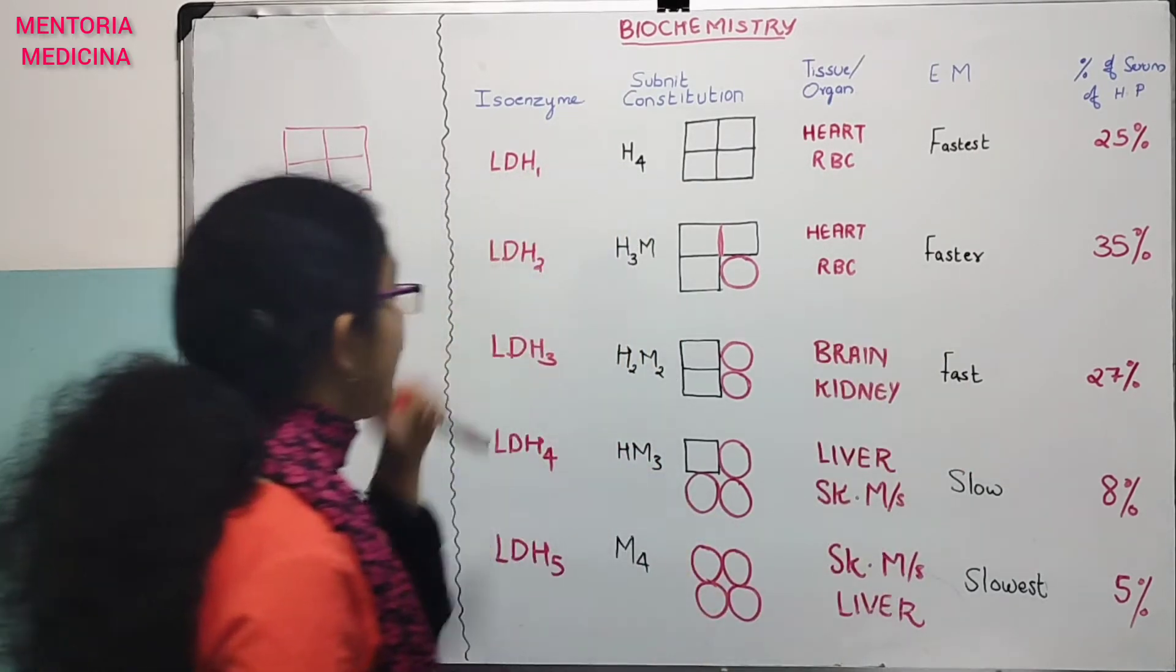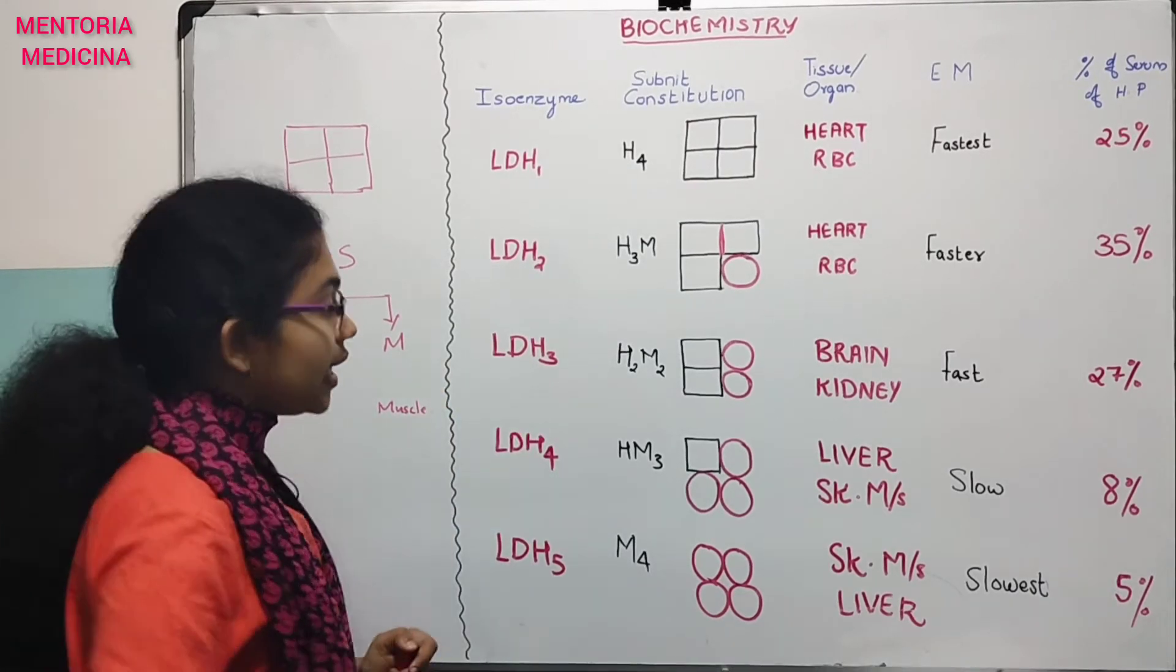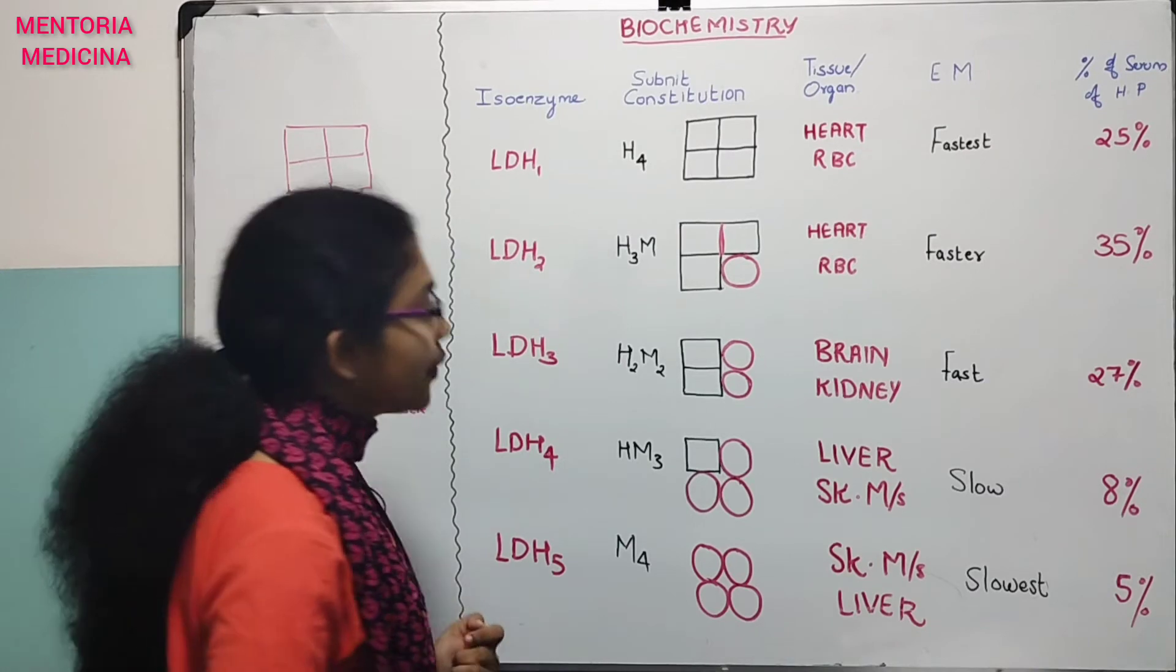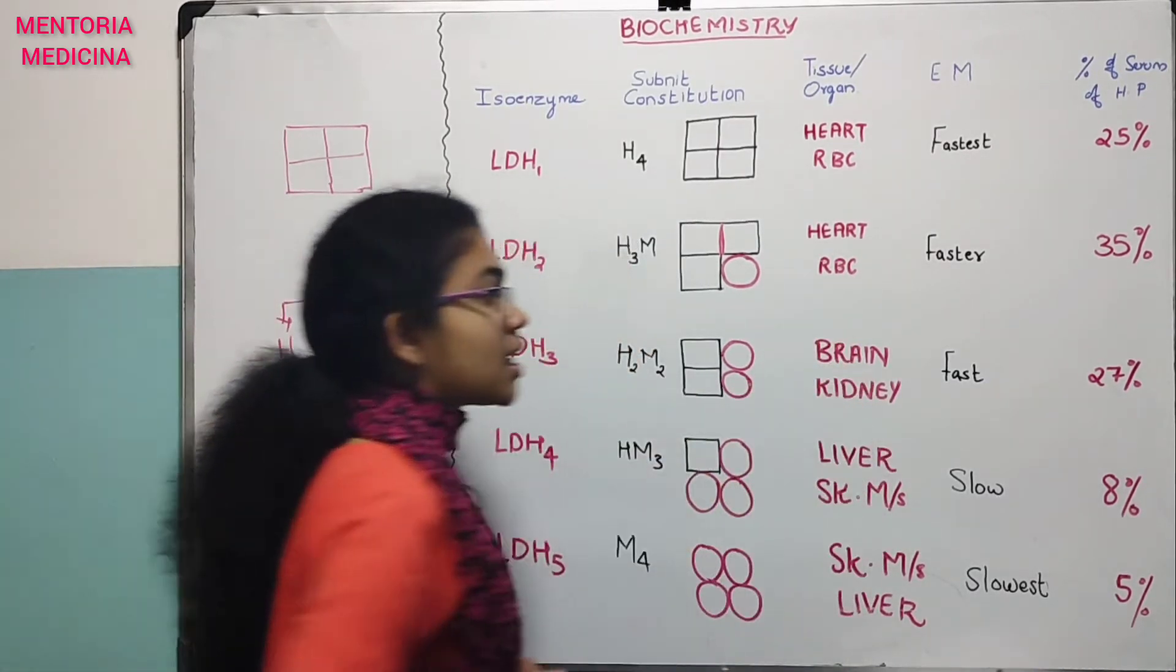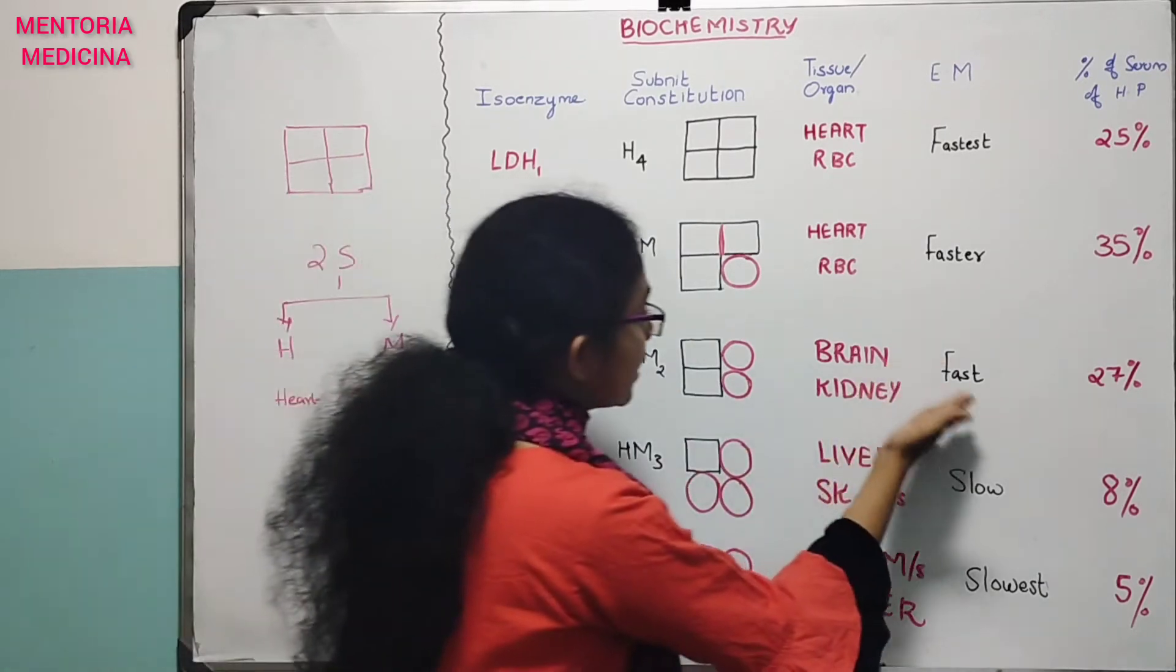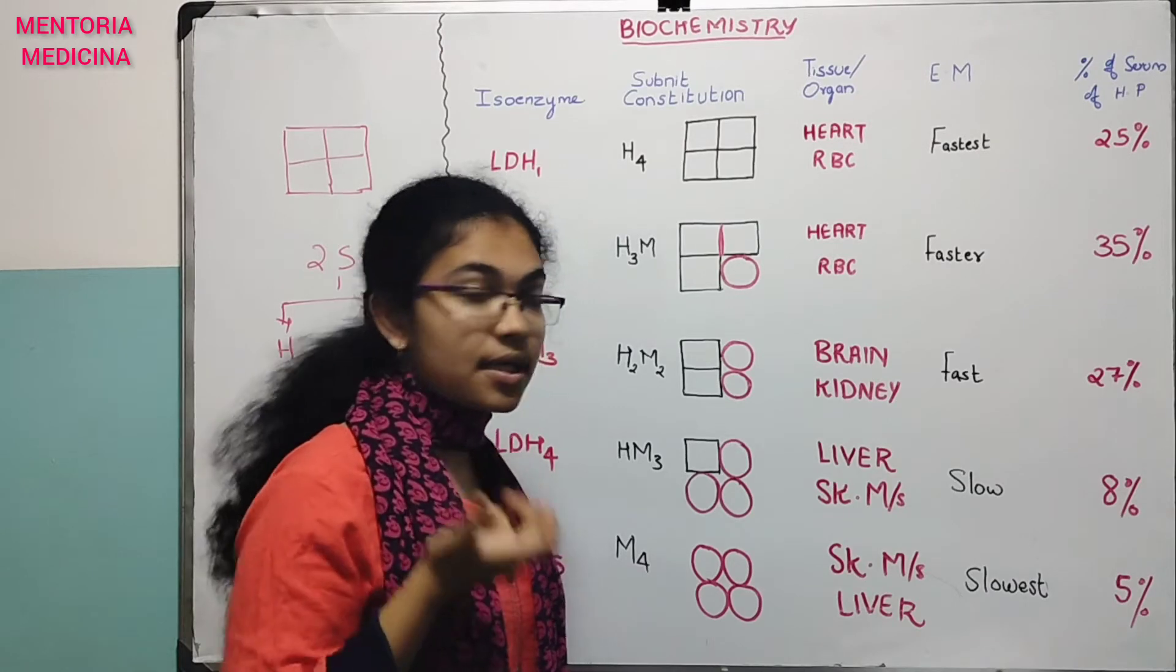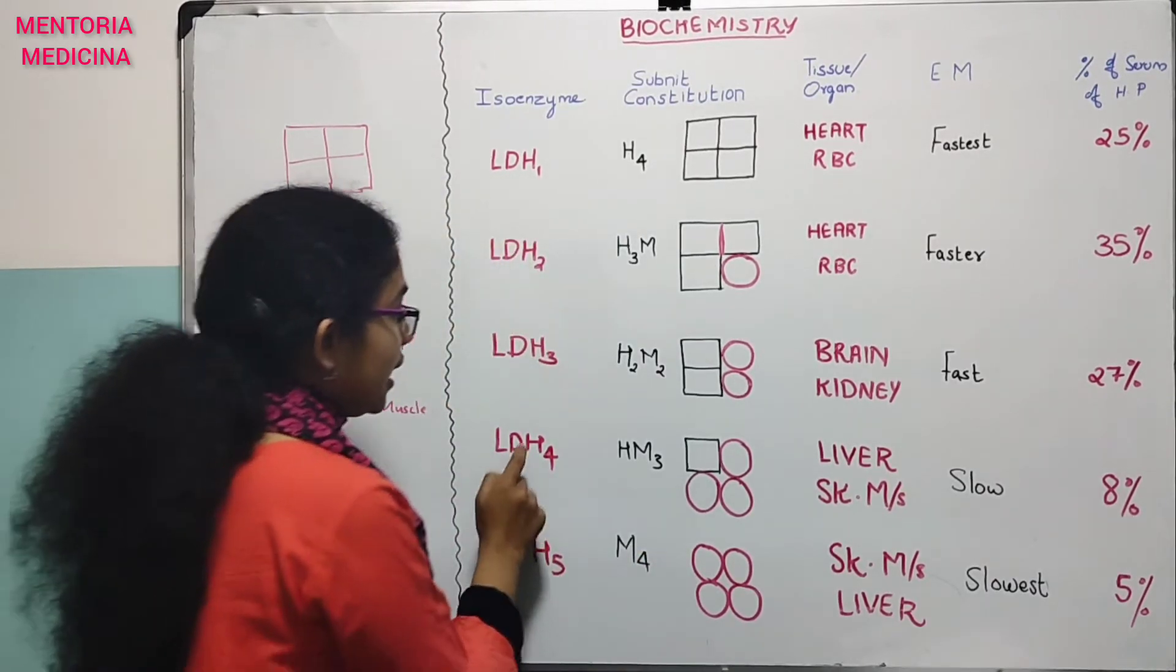LDH3 is two H subunits and two M subunits. Electrophoretic mobility: fast. Serum healthy is 27%.